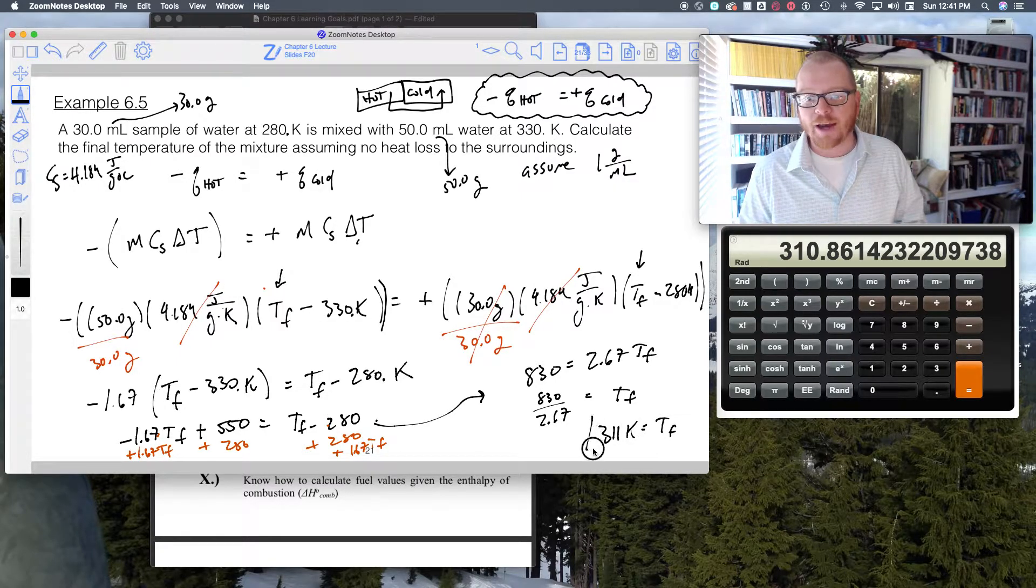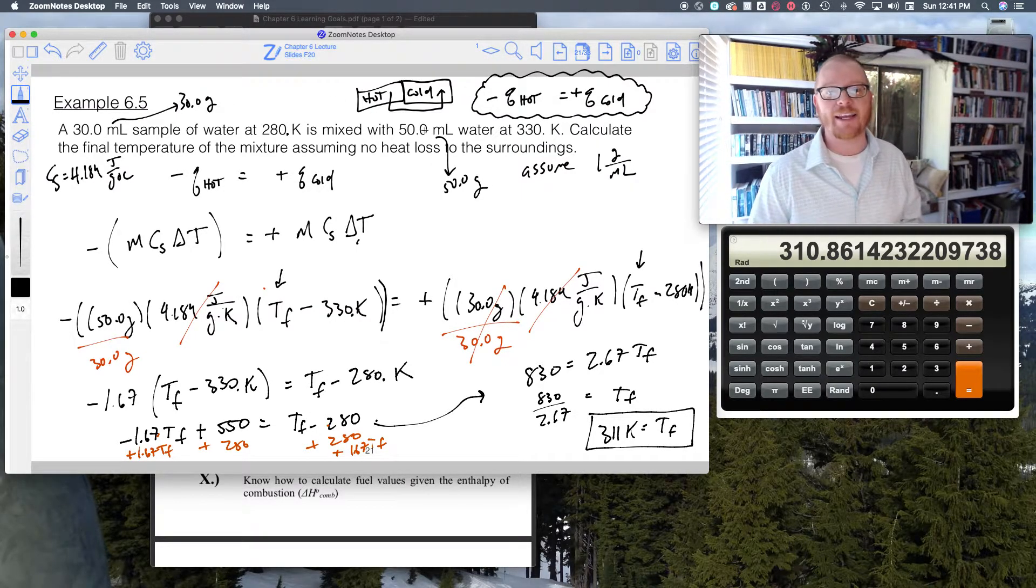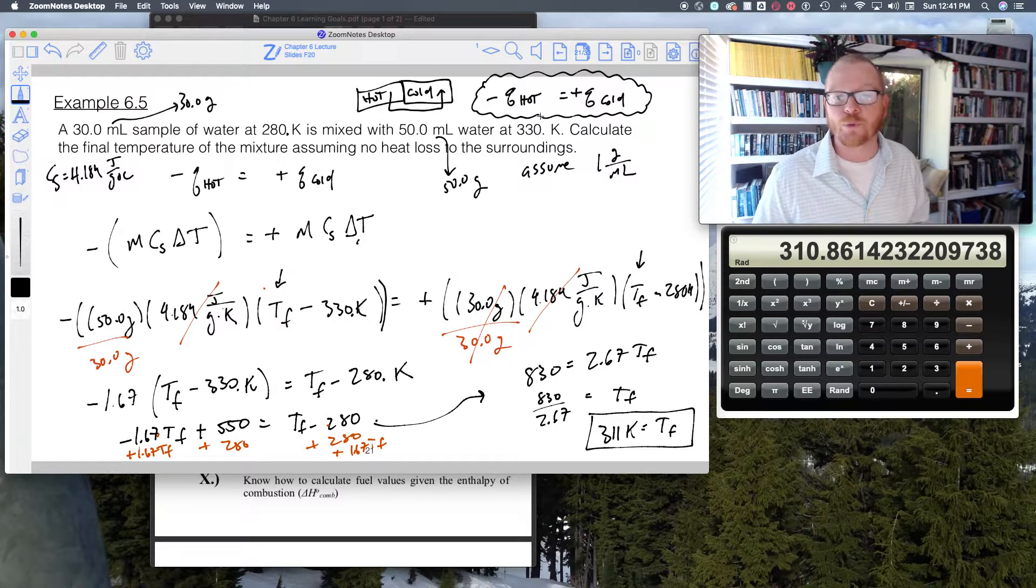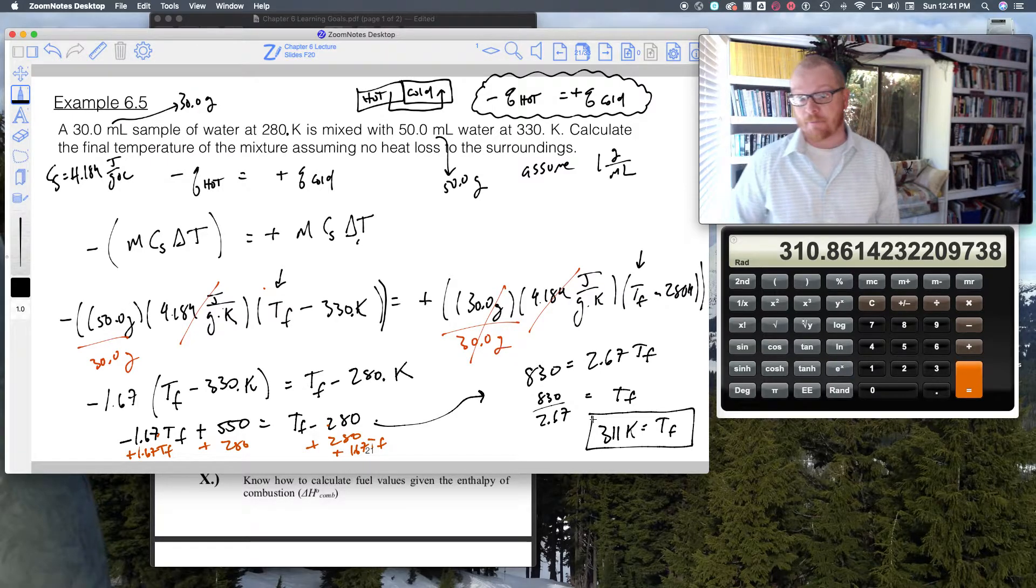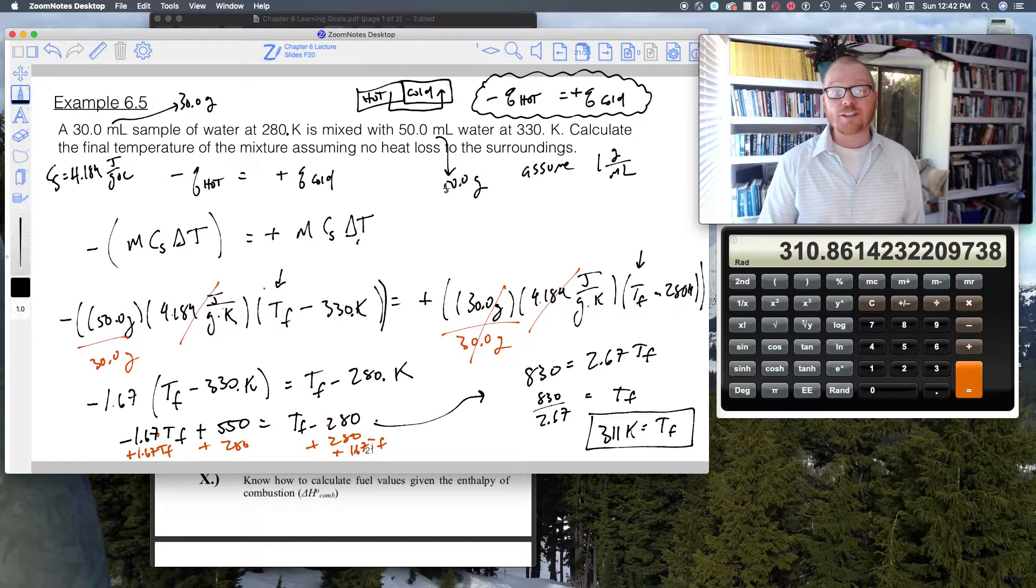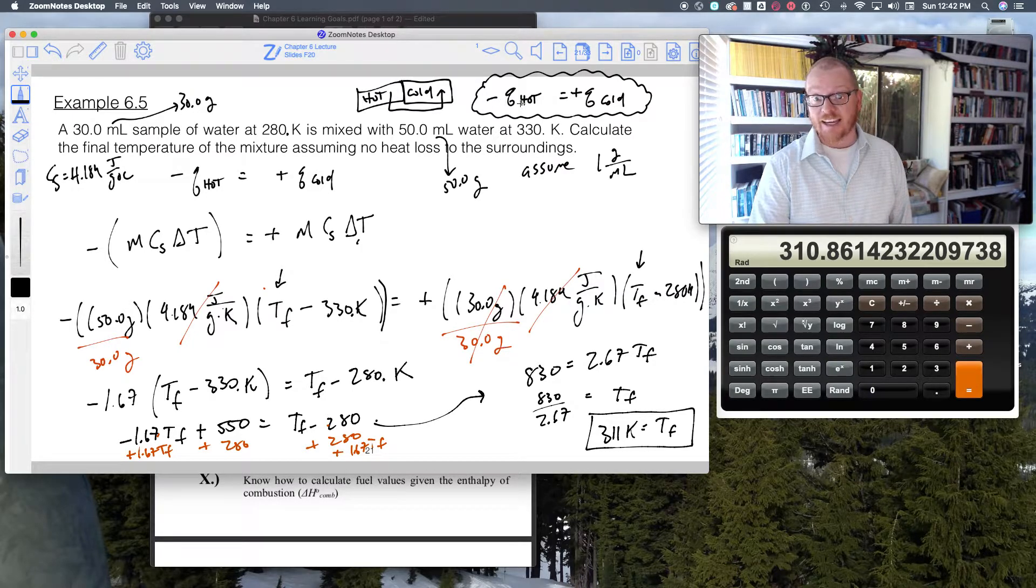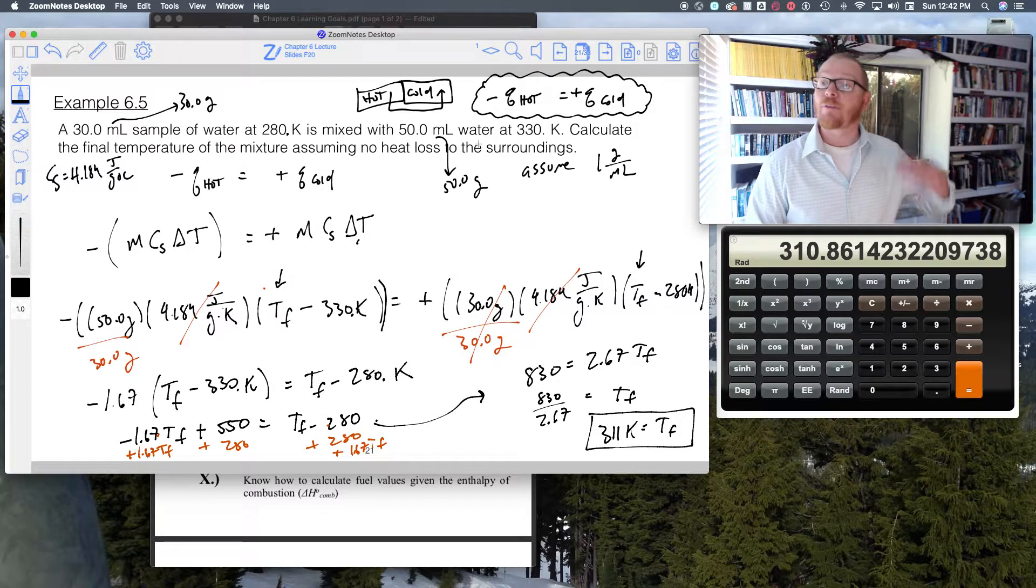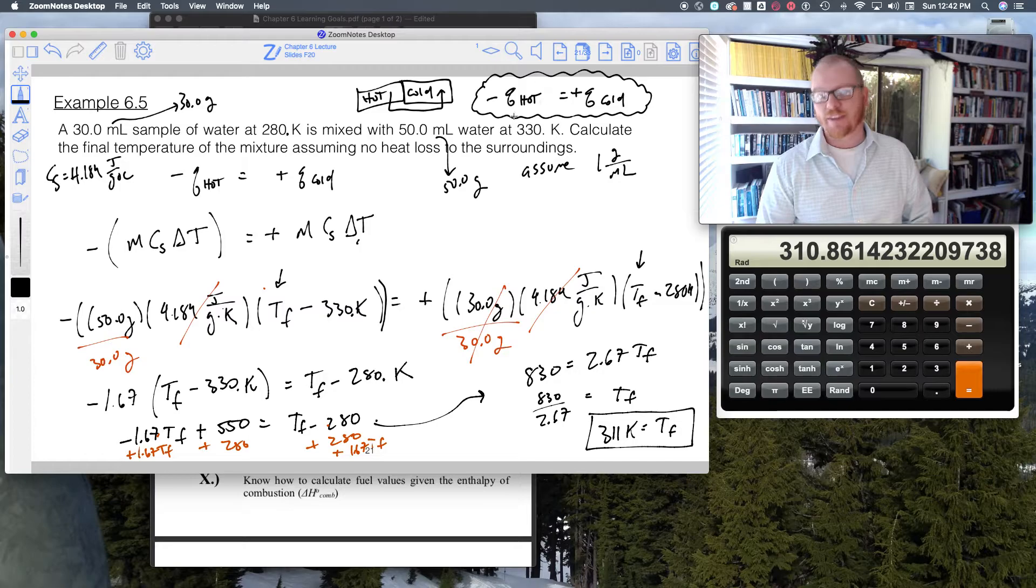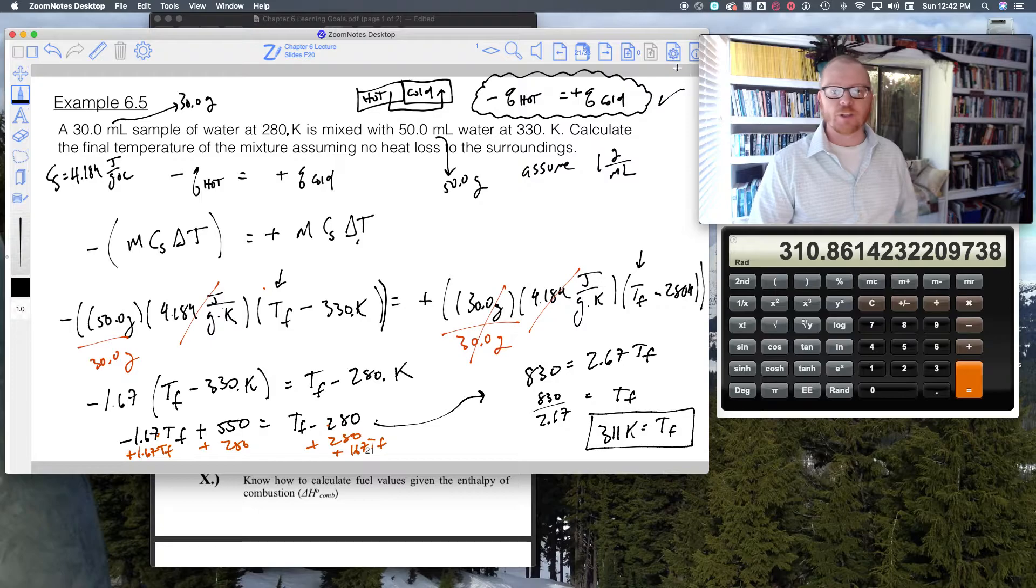I'm gonna solve for Tf. I can add the 280 over to this side, so 550 plus 280 equals 830. I'll add 1.67 Tf to both sides. When I add 1.67 Tf to Tf, that becomes 2.67 Tf. Finally, Tf is 830 divided by 2.67, which equals 311 Kelvin. If you think about it, that makes good sense because the 30 grams of water was at 280 and the 50 grams was at 330.